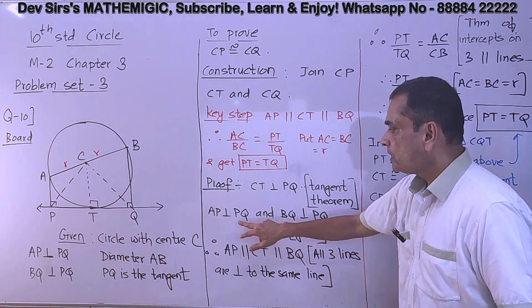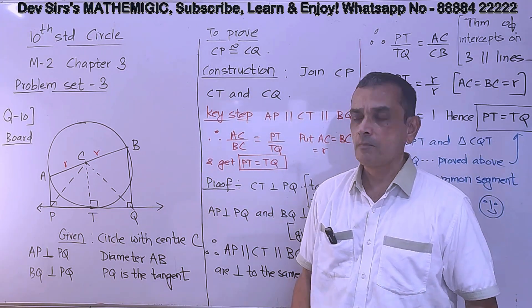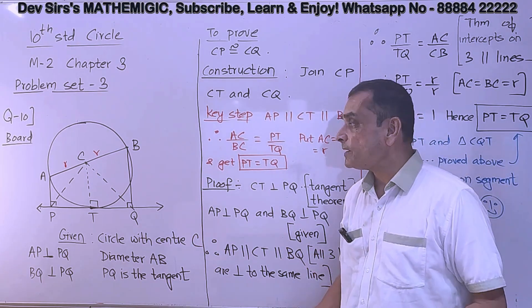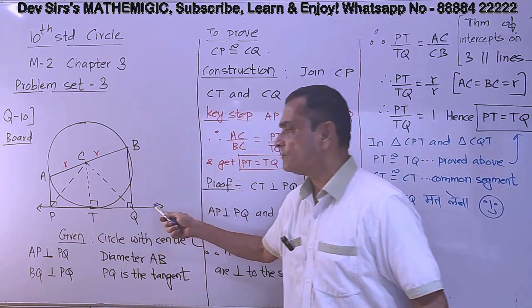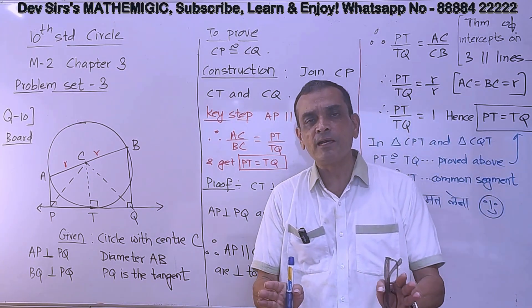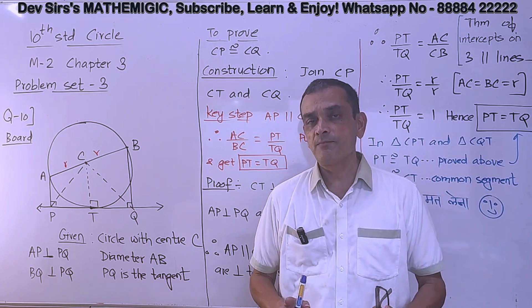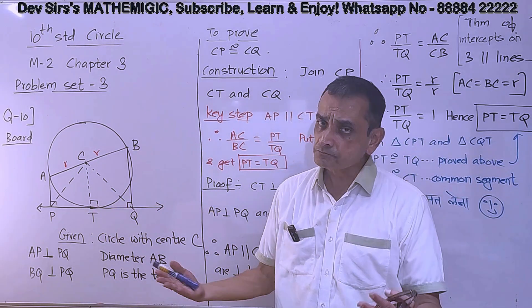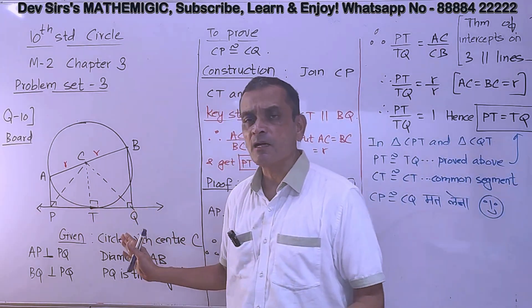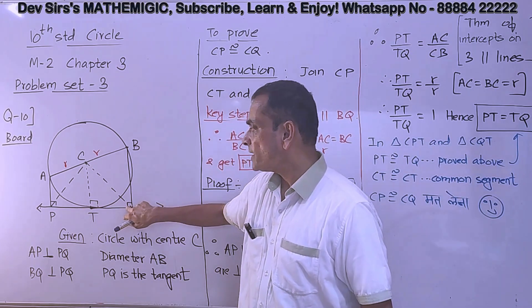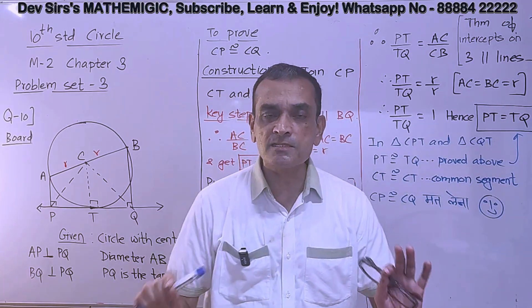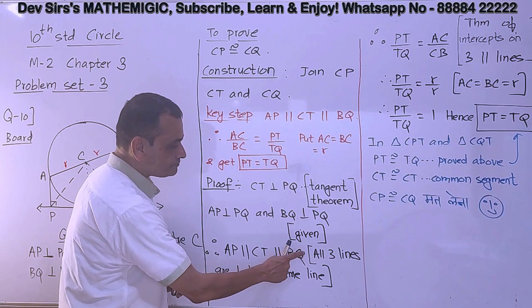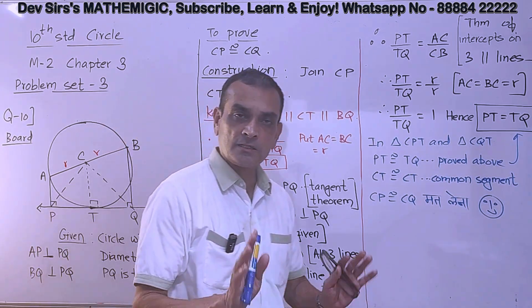One line perpendicular. AP perpendicular to PQ. Given. BQ perpendicular to PQ. Given. So friends, what has happened? All three lines are perpendicular to the same line. When all three lines are perpendicular to the same line, what happens? They are parallel to each other. Simple. So all that we have shown. We have shown is this is 90, this is 90, this is 90. So either you can say corresponding angles are congruent, therefore lines are parallel. They are corresponding angles. Therefore the three lines have to be parallel. Or just write a simple statement that AP parallel to CT parallel to BQ. All three lines are perpendicular to the same line. That's it.